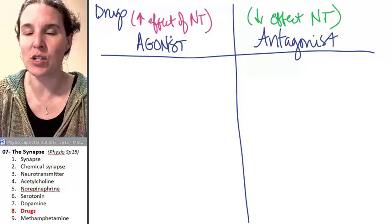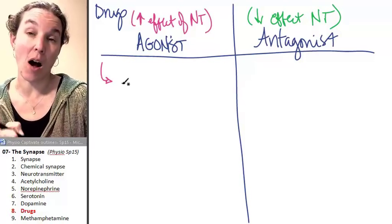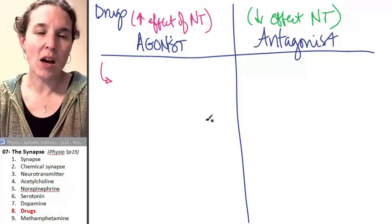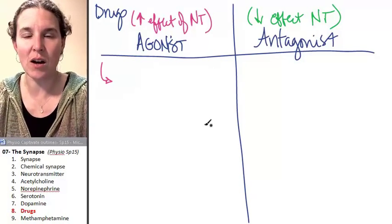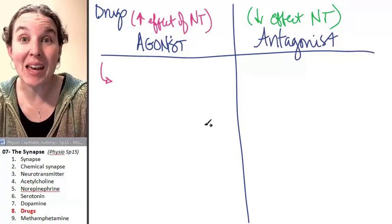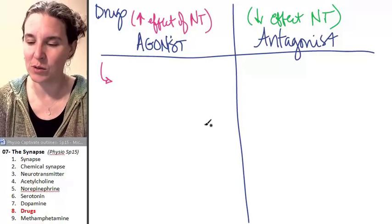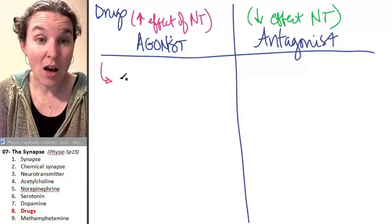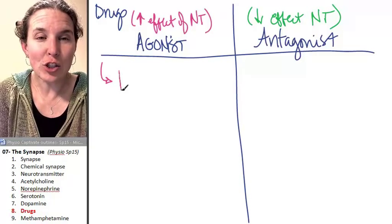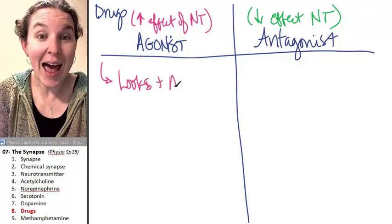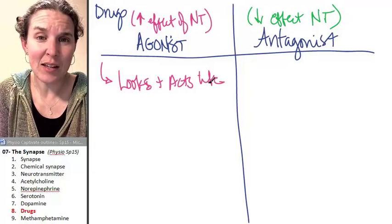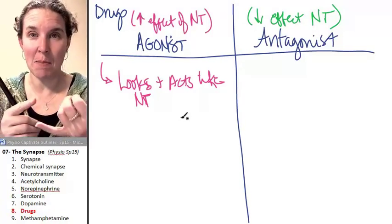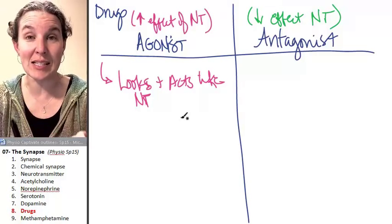Let's talk about agonists first. What would be awesome is if you push pause and just brainstorm, what are some things that a drug could do to increase the action of the neurotransmitter or to mimic the effect of the neurotransmitter? Well, that's the very first one on my list, is that it can basically look like the neurotransmitter. It looks and acts like the neurotransmitter. Seems kind of obvious, but that means that it's going to bind to the proper receptor and stimulate the same response.